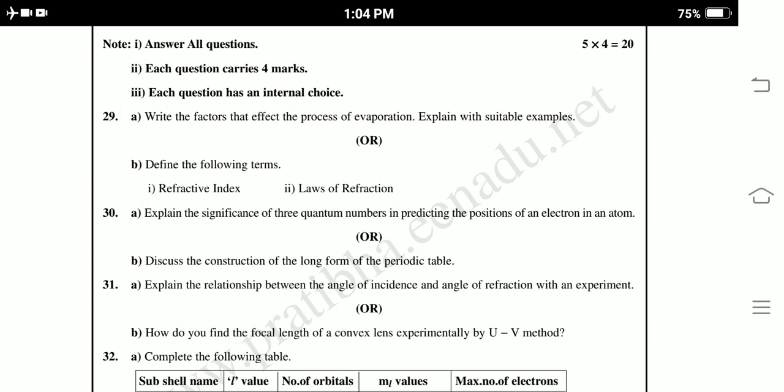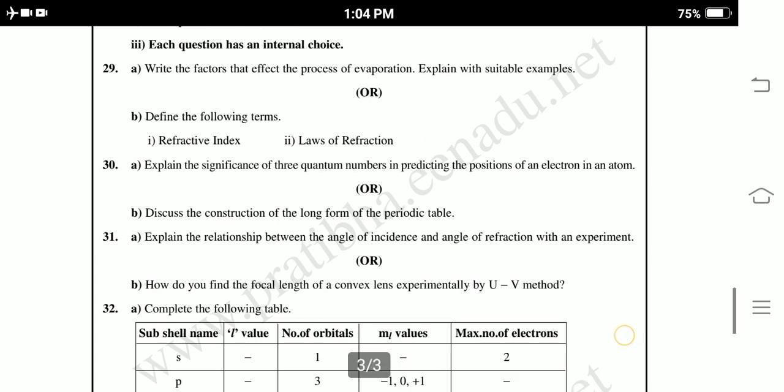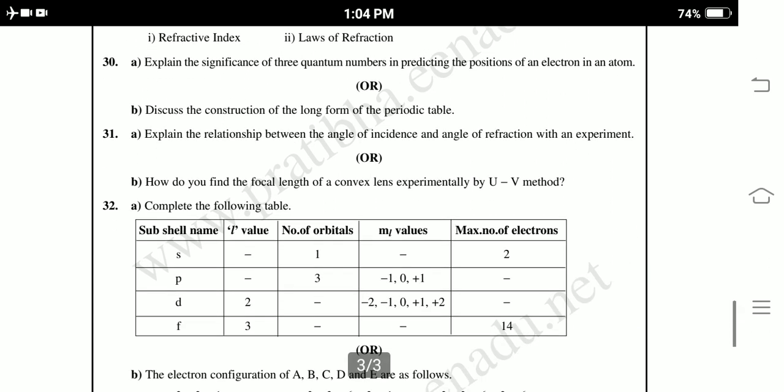Thirty, explain the significance of three quantum numbers in predicting the position of the electron in an atom. Discuss the construction of the long form of the periodic table. 31a, explain the relation between the angle of incidence and angle of refraction with an experiment. How do you find the focal length of convex lens experimentally by UV method?